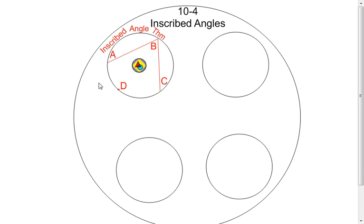This is a little bit different from the central angles that we talked about the other day, where the vertex of the central angle is at the center of the circle. When it's an inscribed angle, the vertex is on the circle.